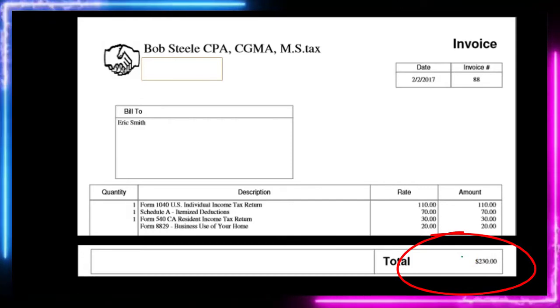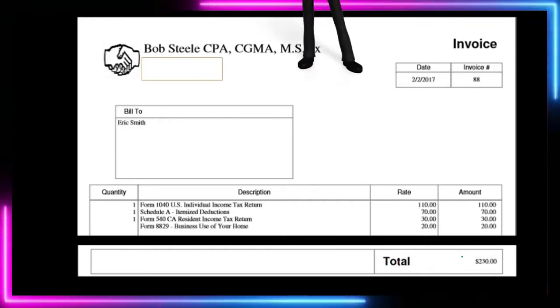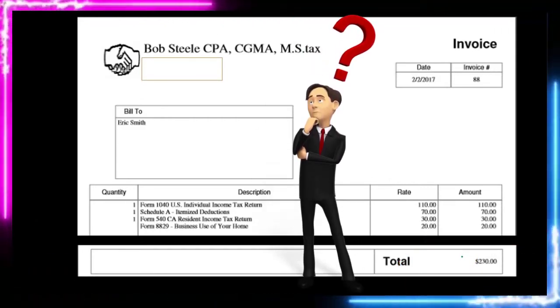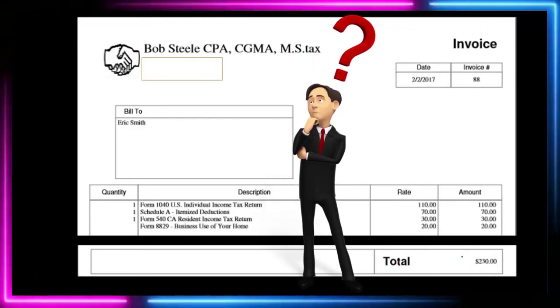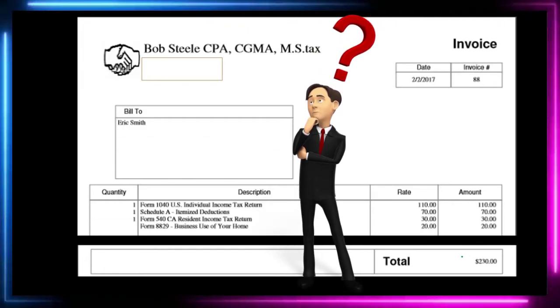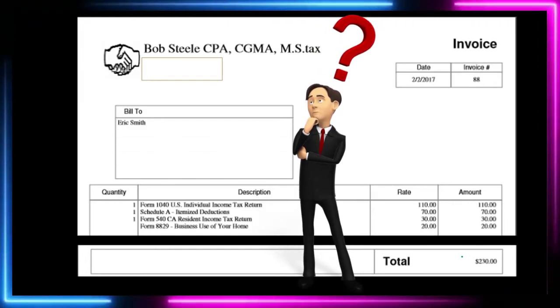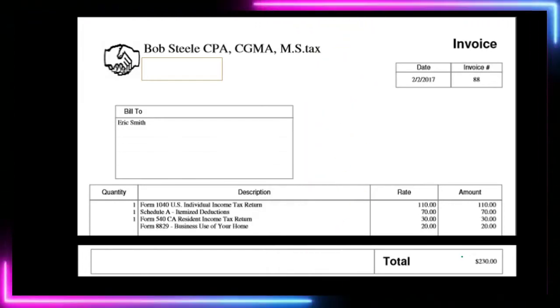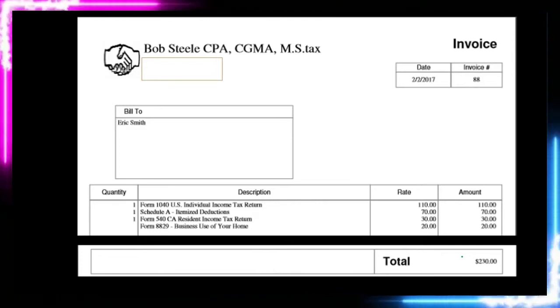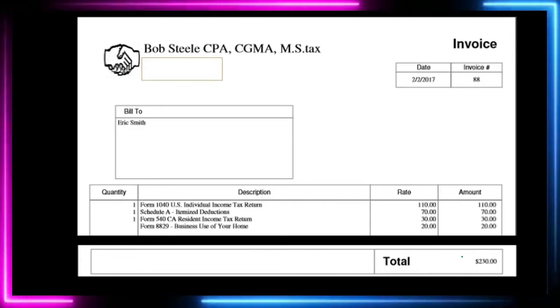When we think about the invoice, we can think about the journal entry related to it. For a service company, that would generally be a debit to accounts receivable and a credit to revenue.